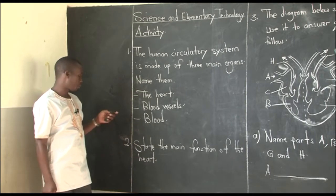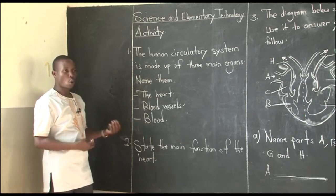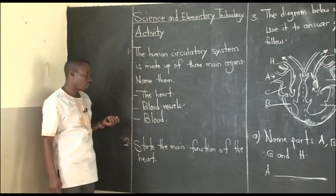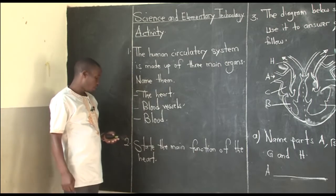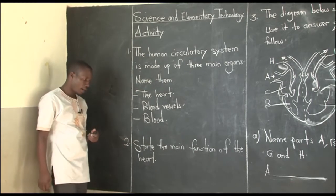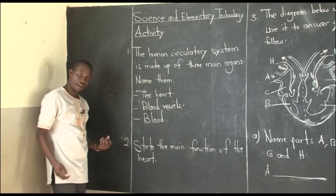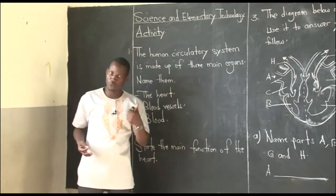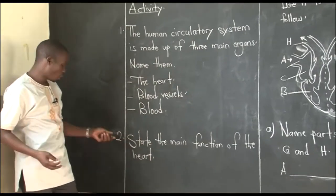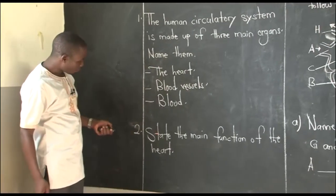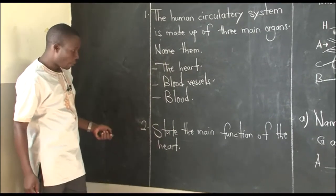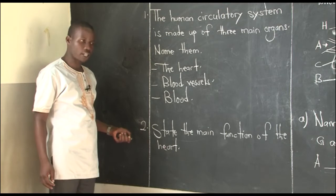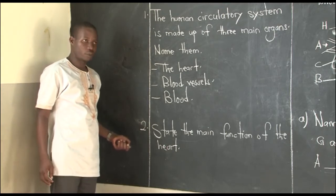We went ahead looking at each one in detail. As we go on with our activities, we will be meeting different questions about the heart, blood vessels, and blood. So we can push to the next number. Number two — we are asked: state the main function of the heart. The human heart is one of the three organs, so we ask about its function.